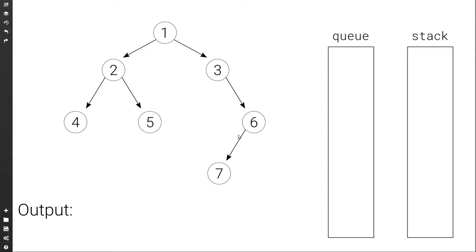Let's actually do this. We start with the root node, we push it to the queue. Then we go to the queue, we set the current node to the front of the queue — 1 — we pop the queue, and instead of printing the node, we push it to the stack. Then we add the right child to the queue followed by the left child.